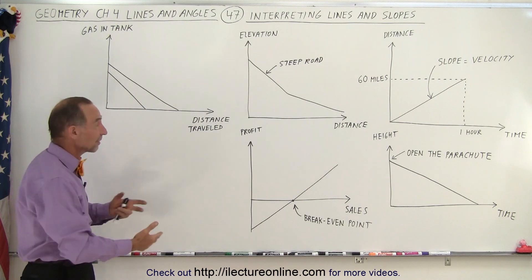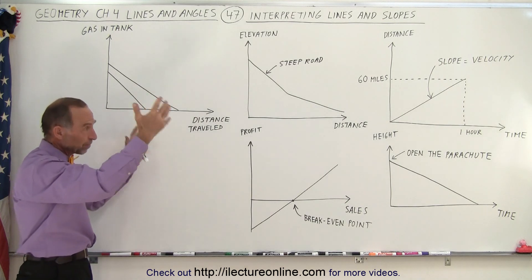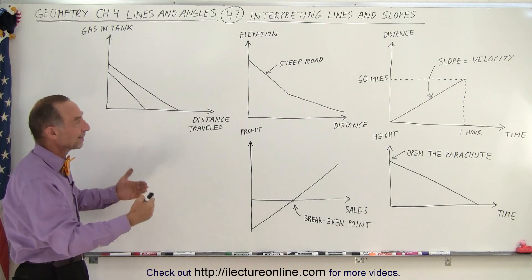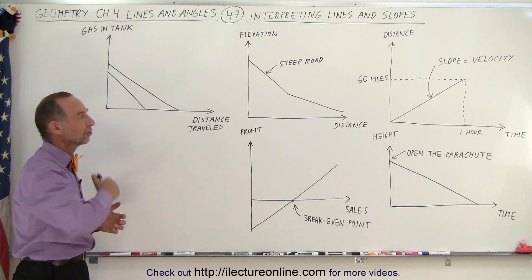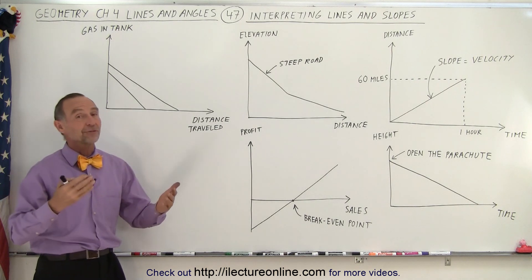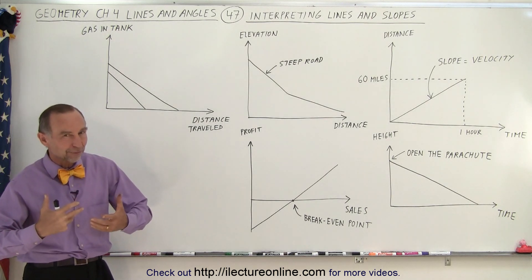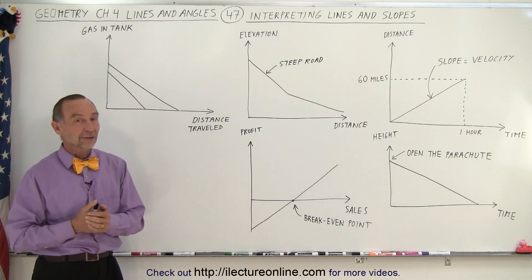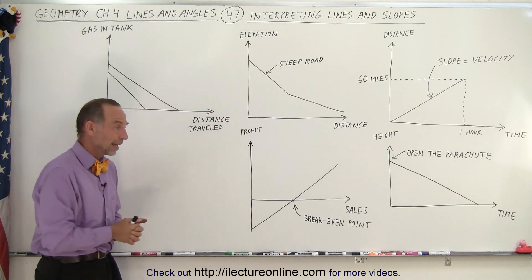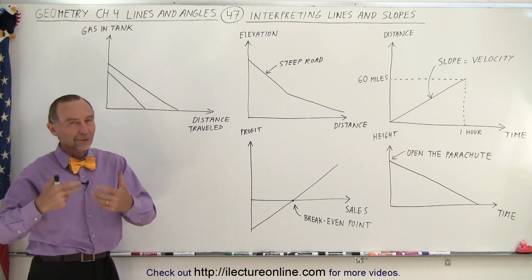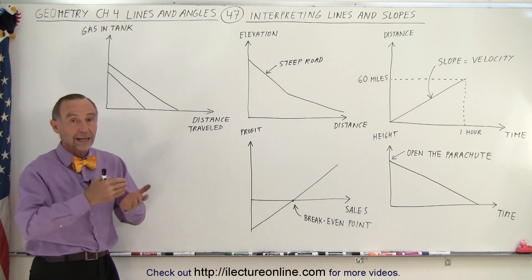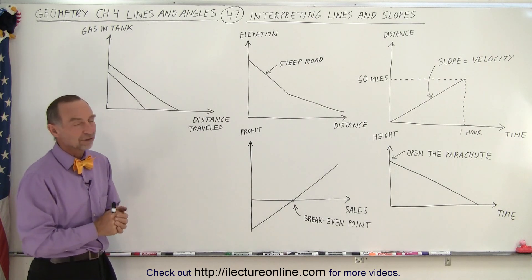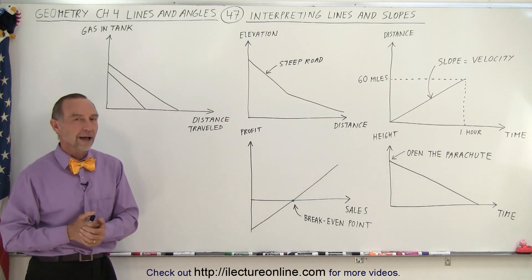So you can see that there's all kinds of examples. I could probably throw another 50 different examples on the board, show all kinds of ways in which we can represent physical things through lines and slopes. And these are just five of those examples to give you some sort of idea how useful it is to talk about lines and slopes. And so now that you understand that these are useful applications, we'll get into the nitty-gritty details of how to actually work with lines and slopes in a more sustained fashion. So stay tuned and we'll show you how to do that.